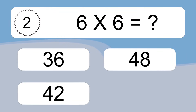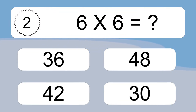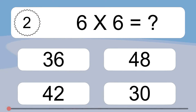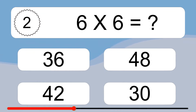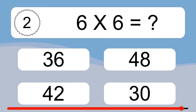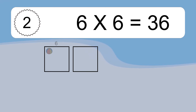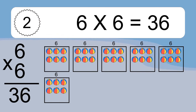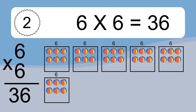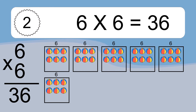6 times 6 equals what? 6 times 6 equals 36. We have 6 boxes, and each box has 6 colorful balls inside. If you count all the balls in all the boxes together, you will have 6 times 6 balls. This equals 36 balls.